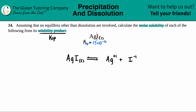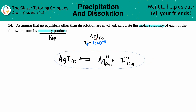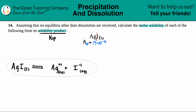So we have aqueous and aqueous because we see charges. Let's make sure that this equation is balanced — it is. There's one Ag and one Ag, and then one iodine and one iodine. So I'm going to bring this over to use it to make our KSP equation.